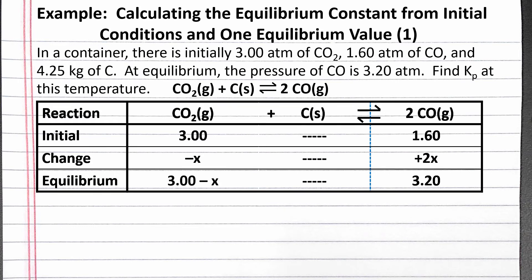So at equilibrium, we have 3.00 minus x as the pressure of carbon dioxide. Now we can solve for x using the column for carbon monoxide. We know the initial pressure, 1.60, plus the change in pressure, 2x, needs to equal the equilibrium pressure, 3.20. Solving for x, we get 0.800 atmospheres.